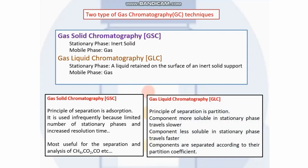In gas liquid chromatography (GLC), the principle of separation is partition. A component more soluble in the stationary phase travels slower through the chromatographic column, while a component less soluble in the stationary phase travels faster. That is, components are separated according to their partition coefficient. In GSC the principle is adsorption, and in GLC the principle is partition.